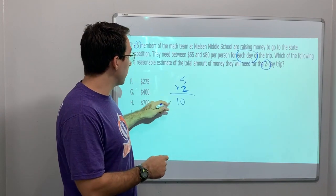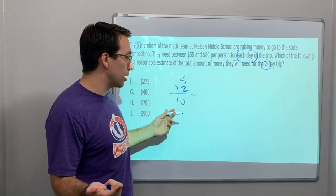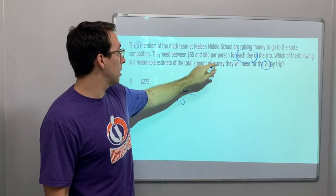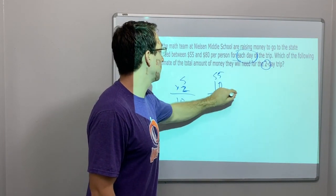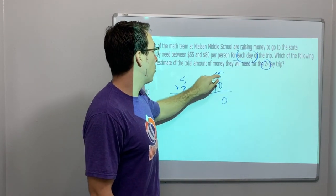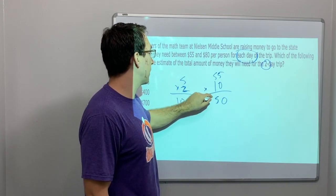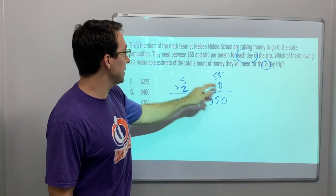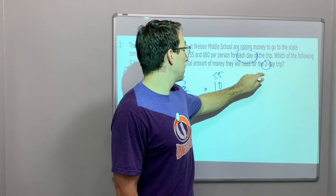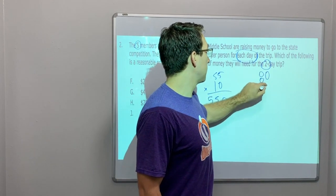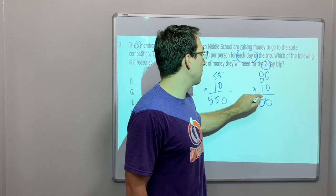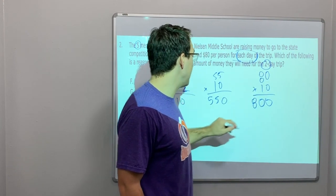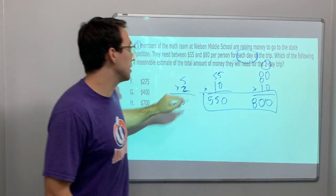So there's ten members on a one-day trip is the same. Let's do ten times $55: add our zero, one times five is five, one times five is five. And ten times $80: one times zero is zero, one times eight is eight.